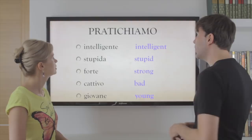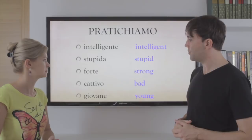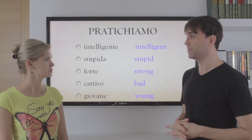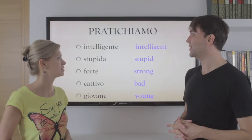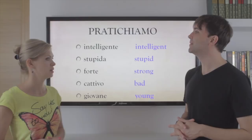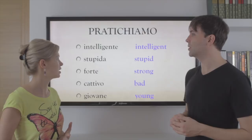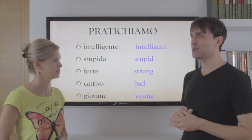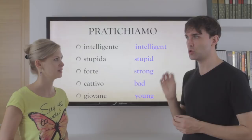Pratichiamo! So we have some adjectives we can practice with nouns. Intelligente — let's practice with cane, dog. The plural: cani intelligenti. Intelligenti — exactly. Stupida — ragazza stupida, ragazze stupide. Stupide — exactly.